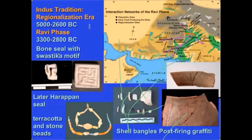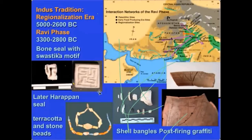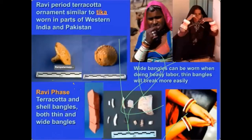Moving from Mehrgarh to Harappa, we have evidence in the Ravi phase of thin and wide bangles, beads made of carnelian and lapis, terracotta beads showing hierarchy, and swastika symbols on bone similar to ones found on later Indus seals — indicating these ornaments also contained ideologies that were visible to the public. The Ravi phase is around 3300 to 2800 BC. Another very important ornament beginning in this early period is the tikka, a distinctive ornament found only in certain parts of South Asia, in Rajasthan, Gujarat, and the Punjab.